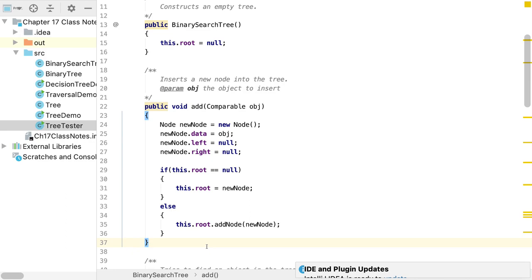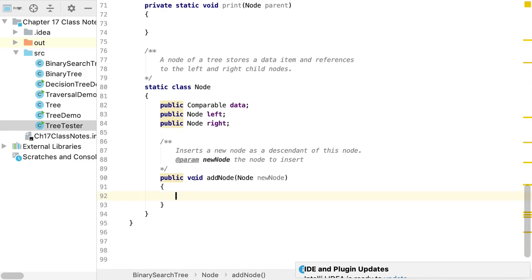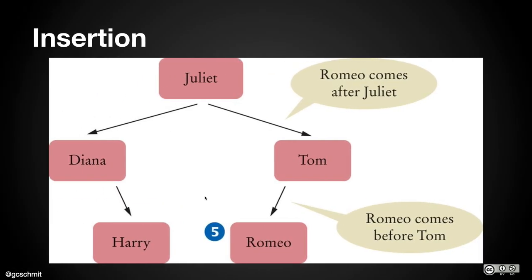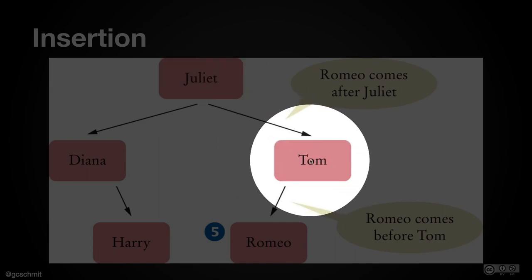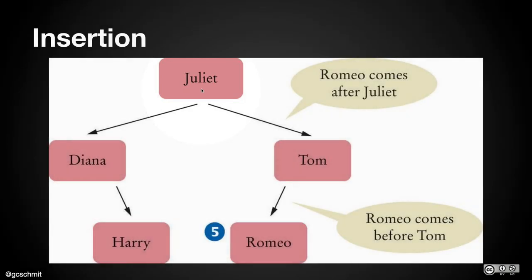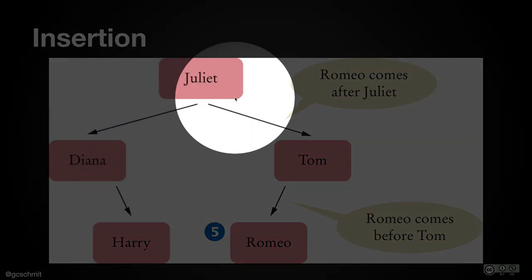We call off to the node class itself to do this, similar to how we implemented size and count leaves. In the addNode method of the Node class, we create a local variable called diff — the difference between the new node's data and the current node's data — by calling compareTo. If diff is less than zero, we go left. If left is null, the new node becomes the left child; otherwise we recursively call addNode on the left child.